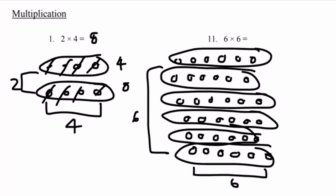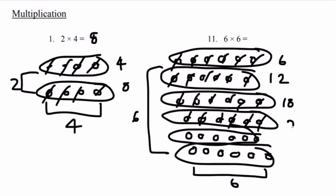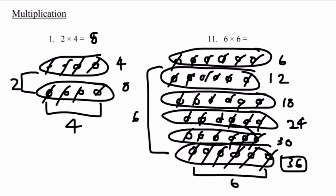Now let's add it all together to find our final answer: 1 through 36, counting all circles across the 6 groups. We have a total of 36. 6 times 6 equals 36.